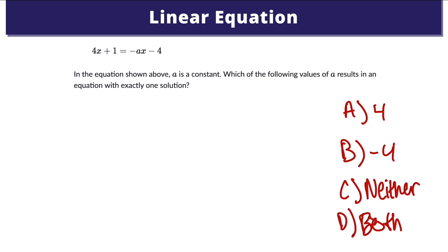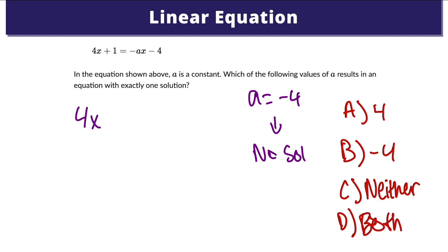Based on the linear equation that we're already given, the equation will have exactly one solution if a is any number other than negative 4. So if a is equal to negative 4, the linear equation will have no solutions. In this case, the answer choice is going to be 4. If we plug 4 into this linear equation, that gives us one answer of negative 5 eighths. So the correct answer is 4, answer choice A.